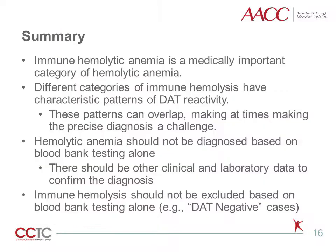Immune hemolytic anemia is a medically important category of hemolytic anemia. Different categories of immune hemolysis have characteristic patterns of DAT reactivity, though these patterns can overlap, making precise diagnosis a challenge at times. It is important to emphasize that hemolytic anemia should not be diagnosed based on blood testing alone — there should be other clinical and laboratory data to confirm the diagnosis. The blood bank should ideally only be determining how best to characterize the hemolytic process. Of equal importance, immune hemolysis should not be excluded based on blood bank testing alone, as in DAT-negative cases. Not every immunoglobulin type is tested for, so if clinical suspicion is high enough, it is best not to exclude autoimmune hemolysis based on lab testing alone.